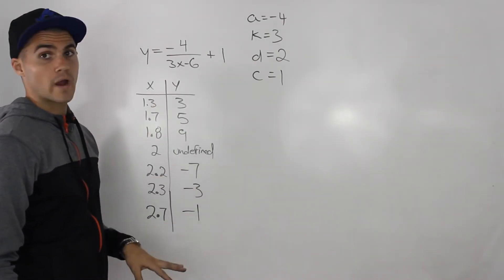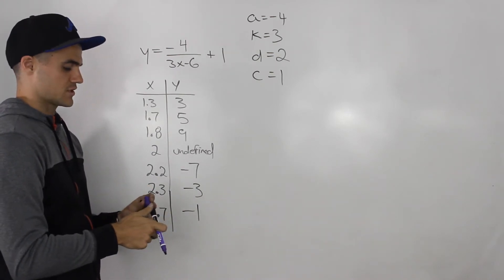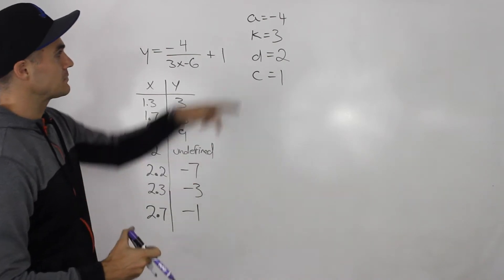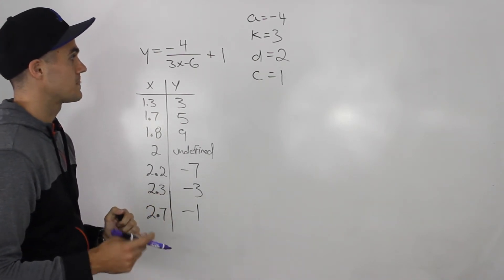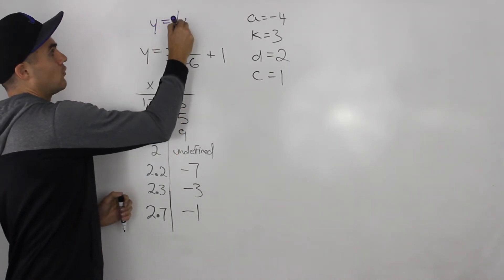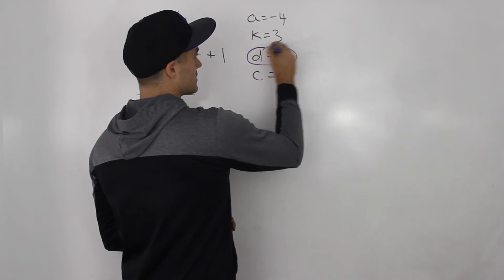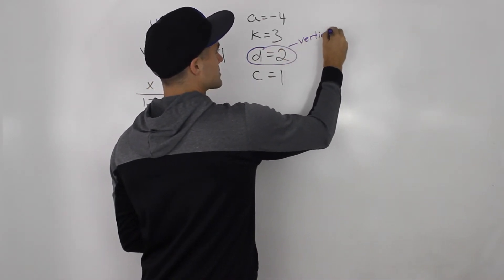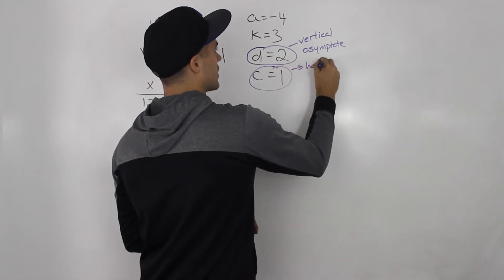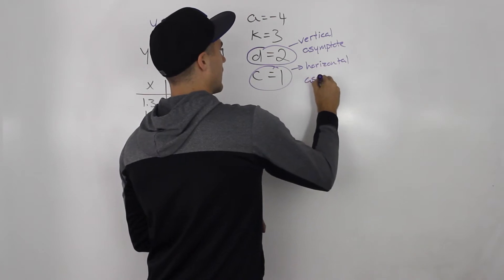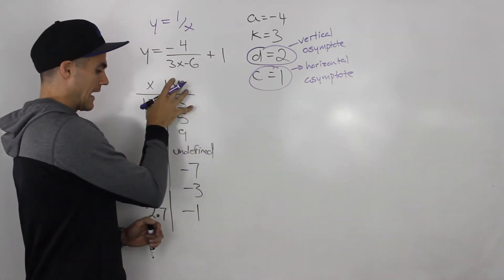Now that we have the table we can graph the function by plotting these points. When working with transformed reciprocal functions, I kept the transformation values a, k, d, and c here because I want to make an important remark. The d value is always going to represent the vertical asymptote, and the c value is going to represent the horizontal asymptote — that's very useful information for graphing.